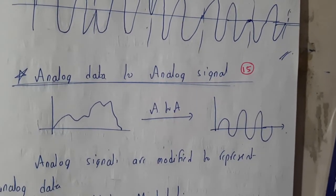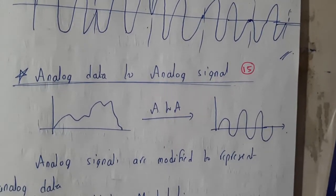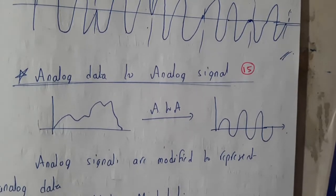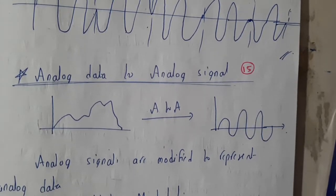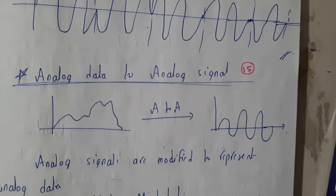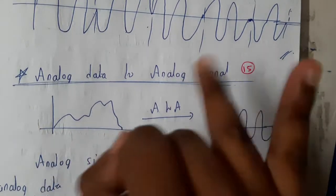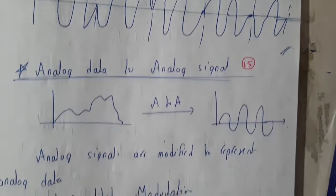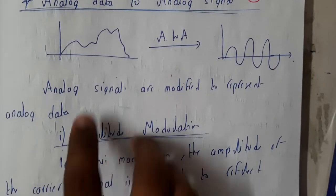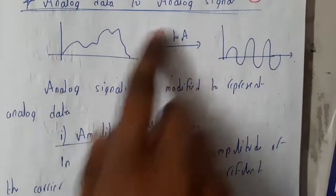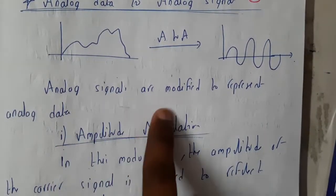Hello guys, we are back with our next tutorial. In this tutorial let us learn how to convert analog data to analog signal. This is a theoretical concept, and here also the same three things we represented in the previous lecture: amplitude, frequency, and phase. So these are the three things we will be discussing again in this lecture.